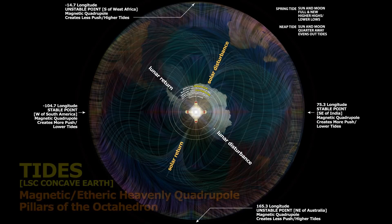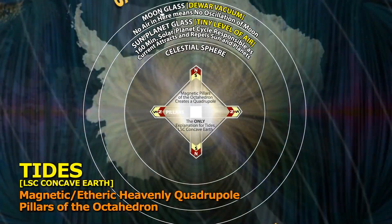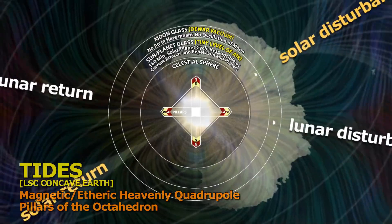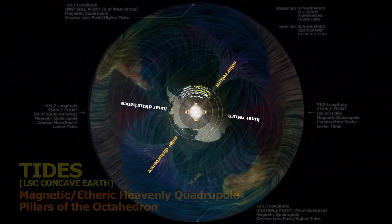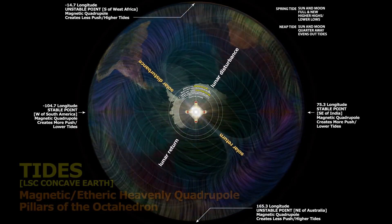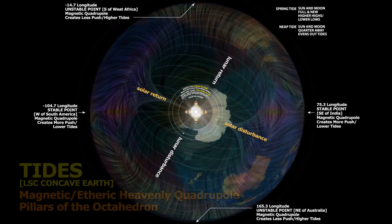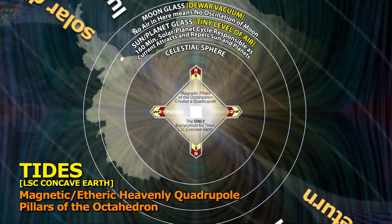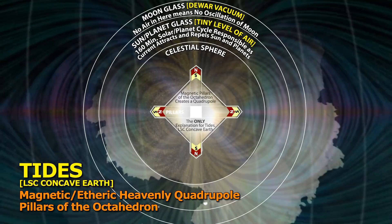Northeast of Australia — and so that gives you a really good understanding. There's no other option ladies and gentlemen, no other model works. This works beautifully: the quadrupole in the middle with the octahedron and the pillars of the octahedron creating the magnetic quadrupole with the ether pushing. If we zoom in a little bit closer here we see the actual octahedron from the top view, we see the outer circle being a moon glass doer.